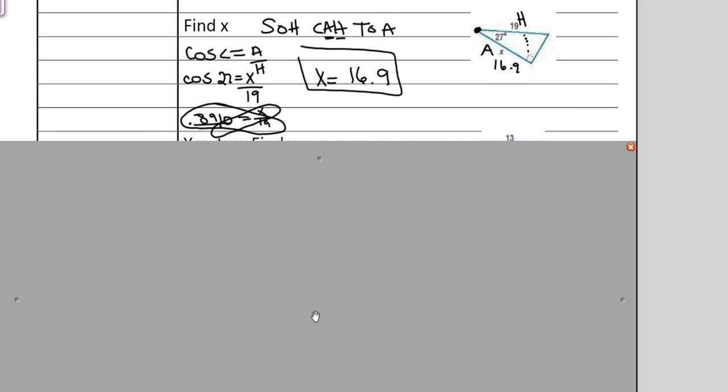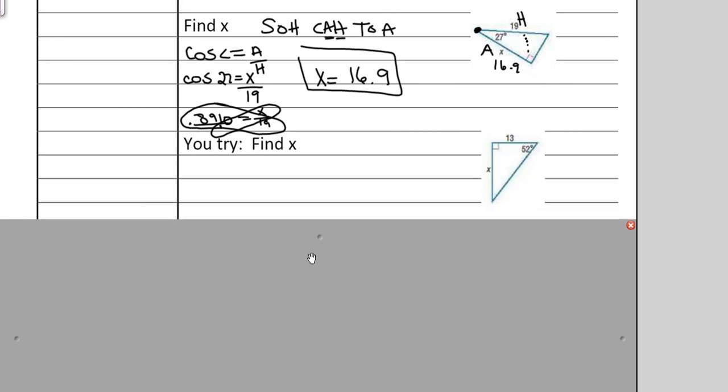All right. The next example, we're going to do it a little bit slow. I'm going to have you pause the video. Just label the sides as they relate to this angle, 52. Is 13 adjacent, opposite, or hypotenuse? Is x adjacent, opposite, or hypotenuse? Pause the video and see if you labeled it the same way that I do. Okay. If you did not label 13 as adjacent and you did not label x as O, opposite, then raise your hand so we can go over why 13 is the adjacent and x is opposite.